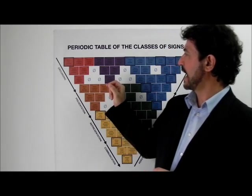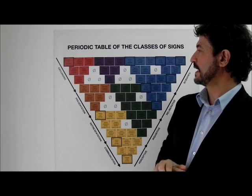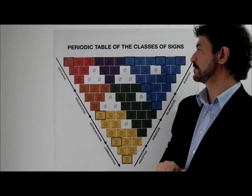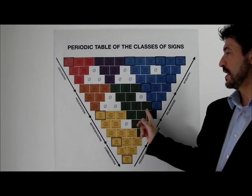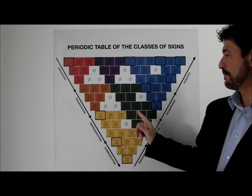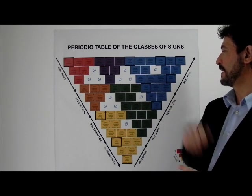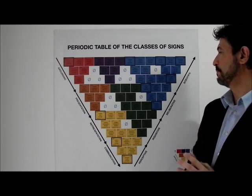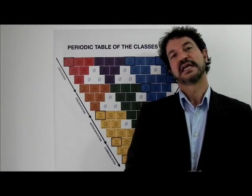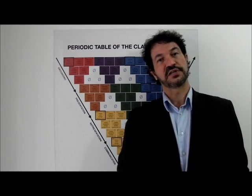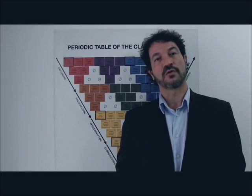We have hollow signs, because the hollow sign is firstness of thirdness. Then replica, because in the first correlate the replica is secondness of thirdness. And finally we have blue, because the ledger sign in the first correlate is pure thirdness. So that's how we explain the colors.